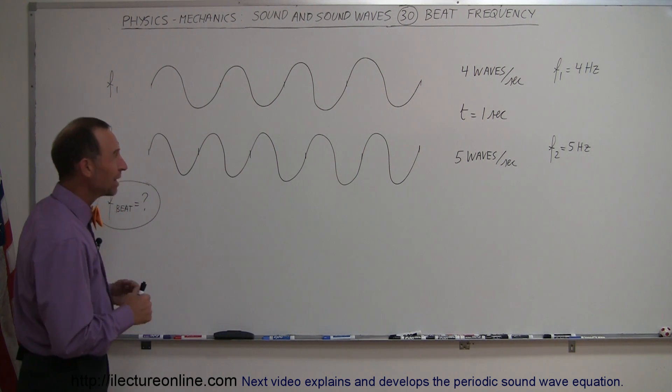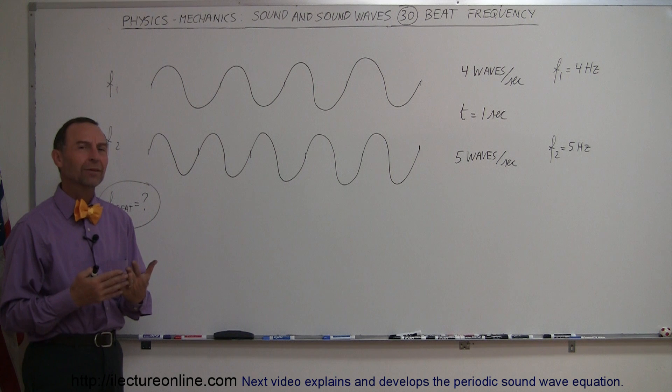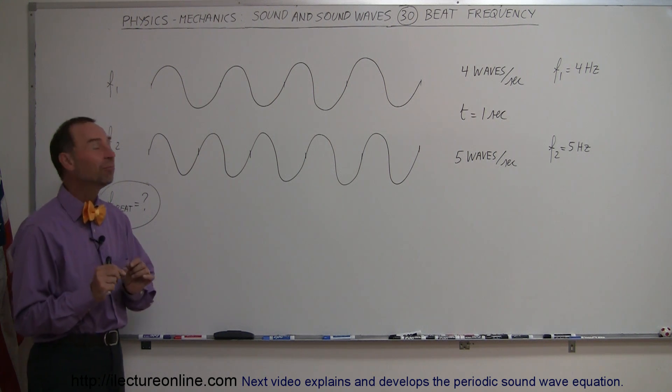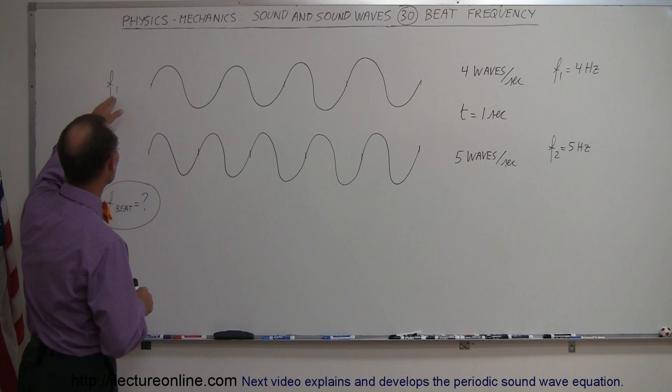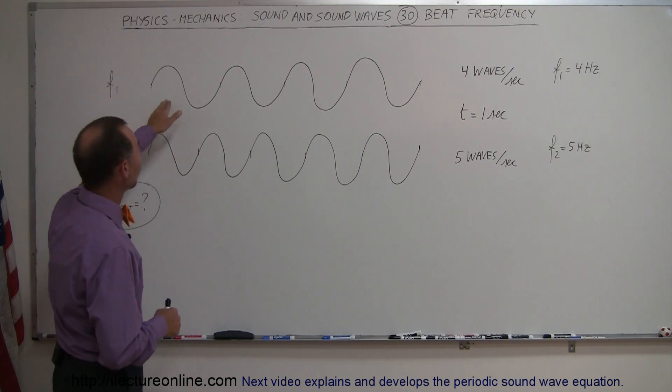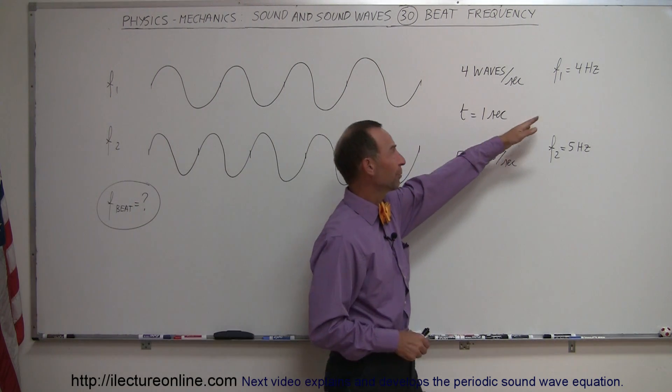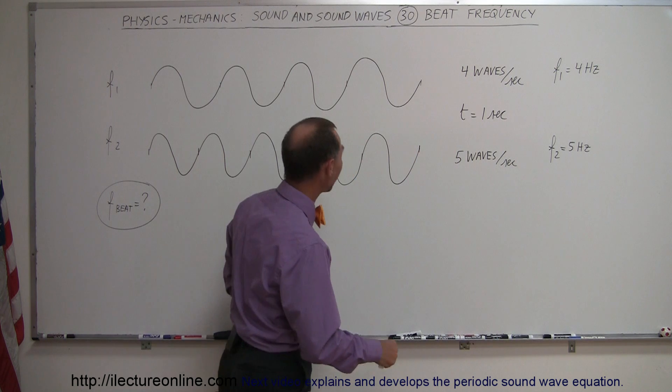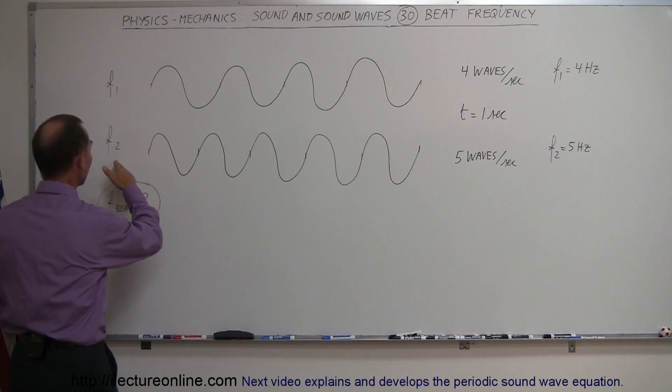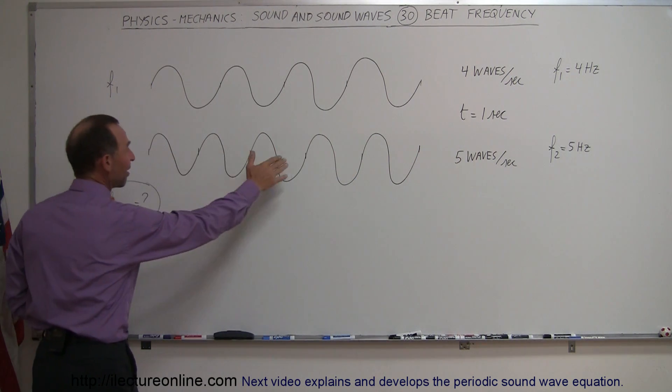Well it turns out when you have two sound sources that put out a sound that has virtually the same frequency, for example here's one sound with frequency 1 equal to 4 waves per second, which means the frequency is 4 Hertz. And here's the second wave being put out by another source, frequency 2 has 5 waves per second.